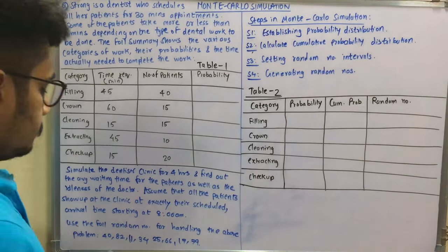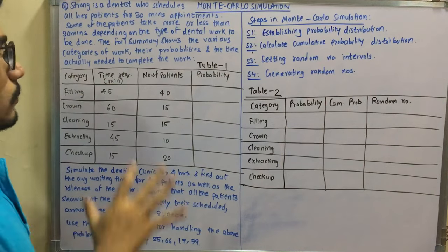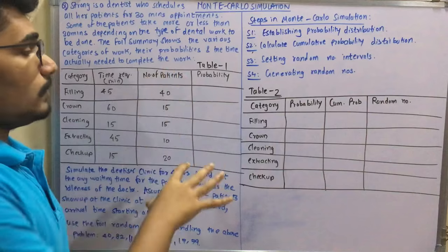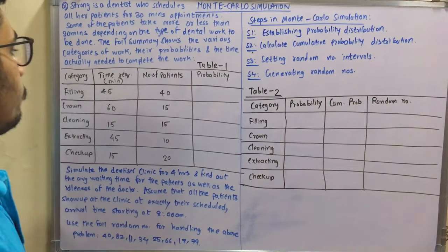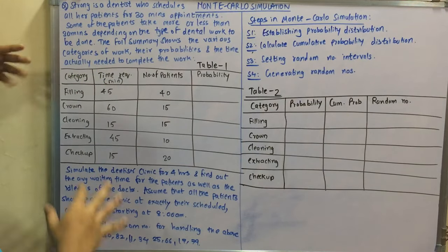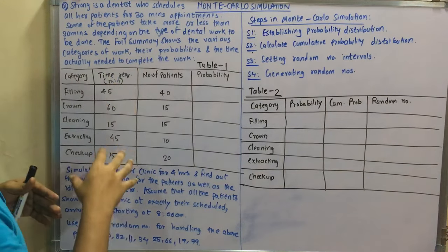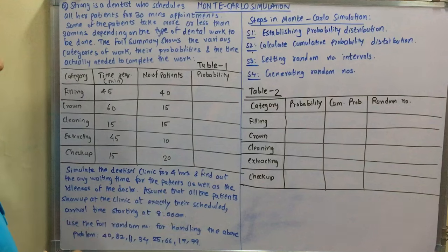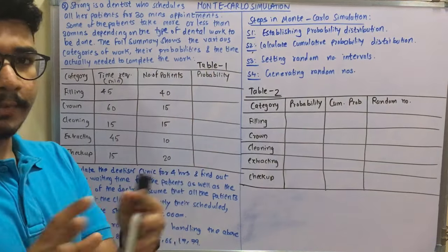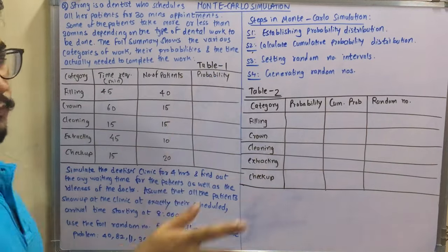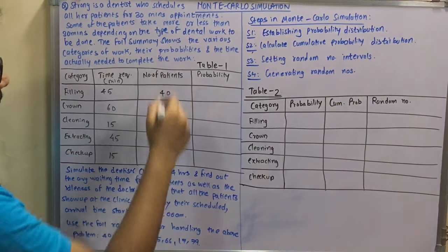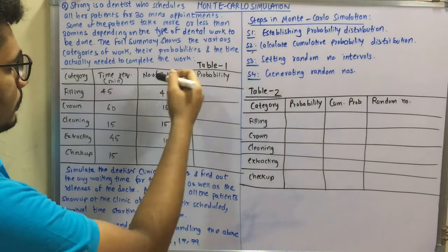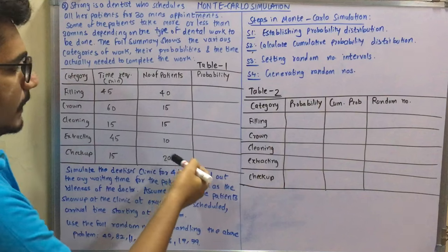They have given a set of 8 random numbers. In this problem, probability values may be given directly, but here we have to calculate them. There are five categories: filling, crown, cleaning, extracting, and checkup, with time required for each and the number of patients per category. Probability is calculated as the number of outcomes divided by total outcomes, so we add all patient counts — 40, 15, 55, 70, 80 — totaling 100.